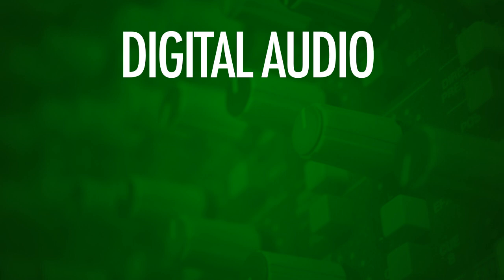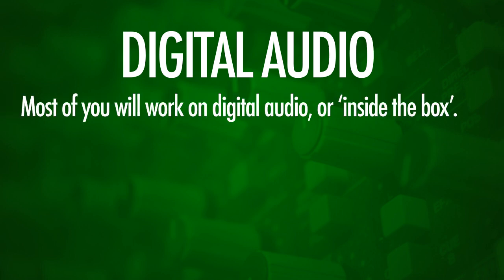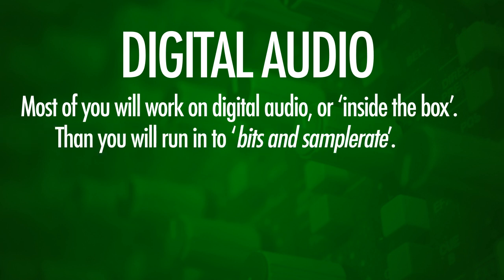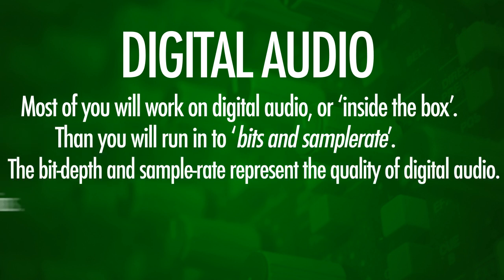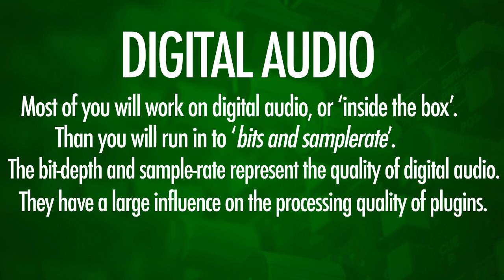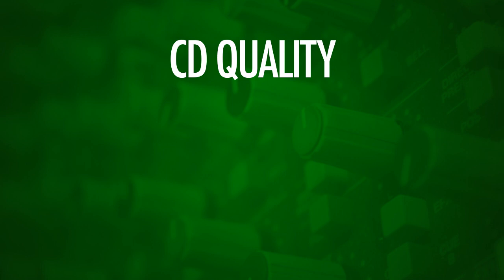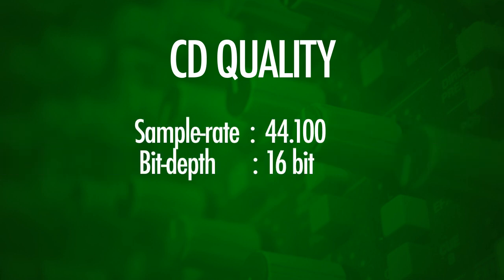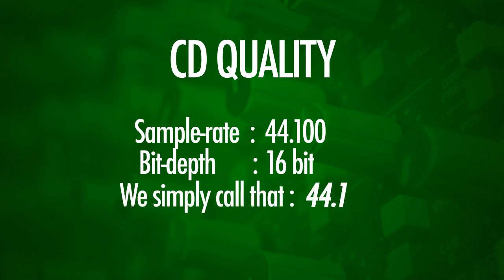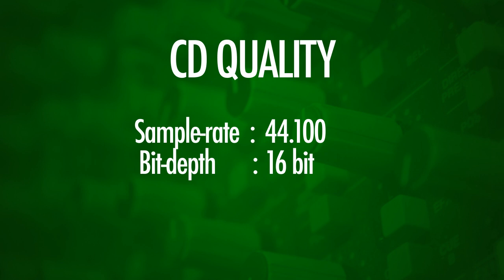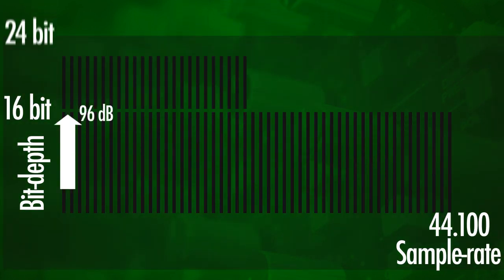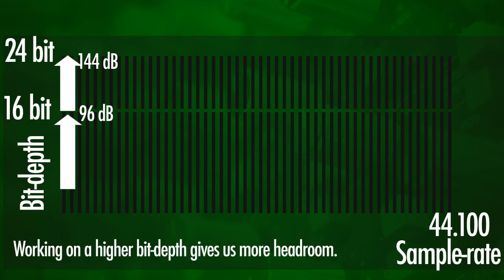Let's take a big leap forward and quickly talk about digital audio. Most of you will be doing your recordings digitally and then we're going to run into bits and sample rate, and this has got a lot to do with the quality of your EQ. Let's take a look at the standard sample rate and bit depth used for CD quality. For CDs we use a bit depth of 16 bit and a sample rate of 44,100, which in audio slang we call 44.1. The 16 bits means that there are 16 bits available to register the amplitude values of a signal. Recording your signal at a higher bit rate, on 24 bits for example, means that we've got a greater dynamic range and thus a bigger headroom to work with while mixing digitally.